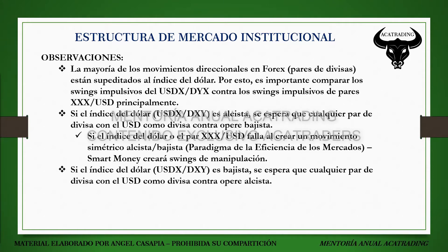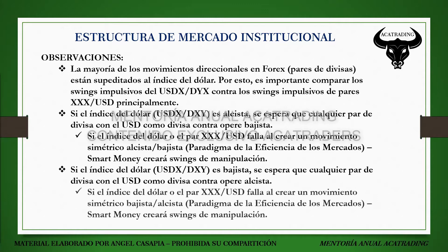Si el índice del dólar, el USDX o el DXY, es bajista, se espera que cualquier par de divisa con el dólar como divisa contra opere alcista. Es decir, si el dólar está bajista, euro dólar, cable, Aussie dólar o kiwi dólar deben estar alcistas. Por lo tanto, si el índice del dólar o el par, por ejemplo libra dólar, falla al crear un movimiento simétrico, repitiendo el paradigma de la eficiencia de los mercados, el Smart Money creará swings de manipulación. Por ejemplo, podemos tener la ruptura de un máximo en el DXY con un movimiento de neutralización, un máximo más alto que el anterior.